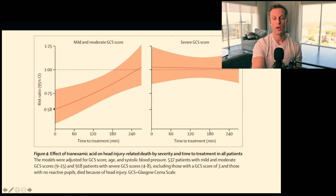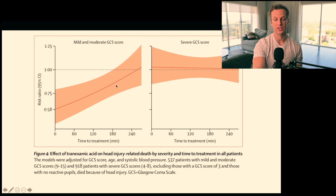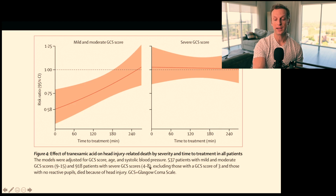They also looked at time to treatment. If you delay treatment, the mortality difference shrinks. Tranexamic acid given before 60 minutes shows the biggest effect. Beyond 180 to 240 minutes, you're basically seeing no effect — the 95% confidence intervals cross that one line. In severe cases — GCS 4 to 8 in this subgroup since GCS 3 was removed — there was no difference. Mild to moderate cases used GCS 9 to 15.